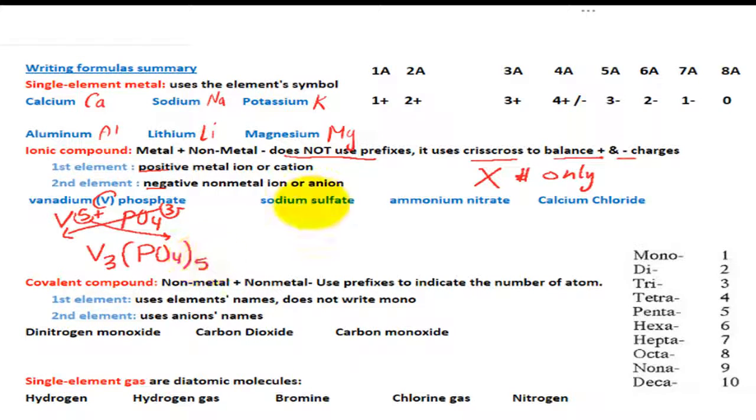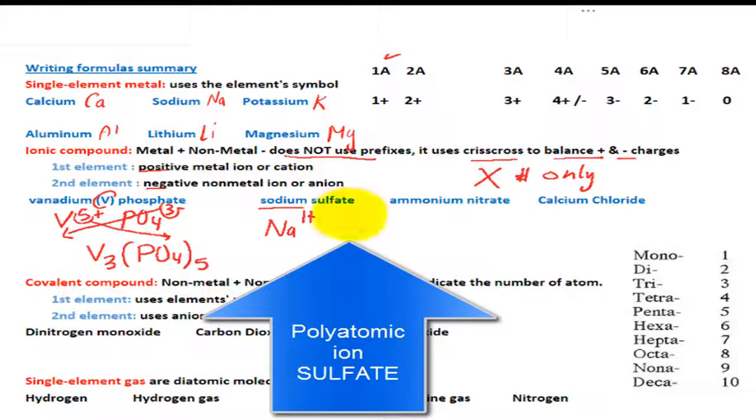The next thing we have is sodium. Now, sodium does not have Roman numerals, but we know that sodium is in group 1A. Therefore, it has to be 1+. So Na 1+.